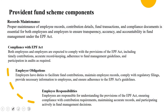When looking at the Provident Fund scheme components, we have records maintenance, compliance with the EPF Act, employer obligations, and employee responsibilities. Employers are obligated to maintain meticulous records pertaining to the EPF scheme for each eligible employee. These records should include employee details such as name and designation, salary details including basic wages and DA allowance, monthly deduction details, employee and employer contribution amounts and dates deposited into the EPF account, and nomination details — the beneficiary nominated by the employee.